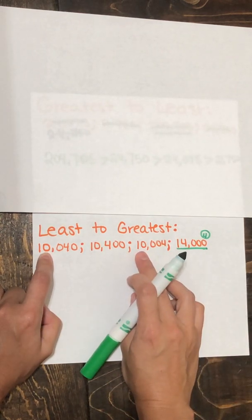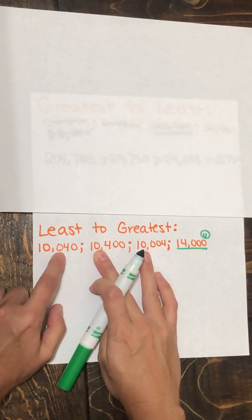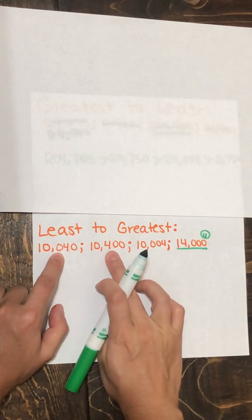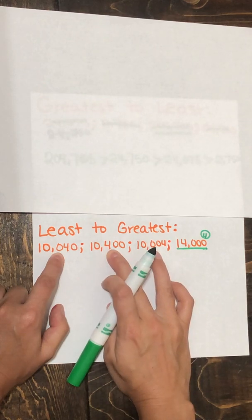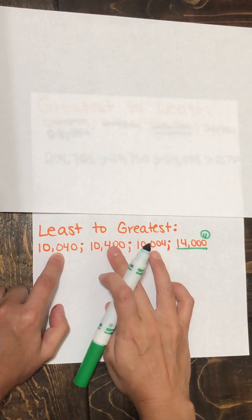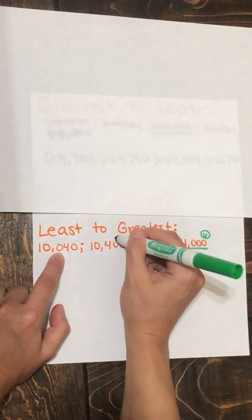Now I'm back to these three. It was 0, 0, and 0. So let's move on to the hundreds place. I've got a 0, a 4, and a 0. Now the greatest value here is a 4. So I know that must be my next largest. So that's going to come third.